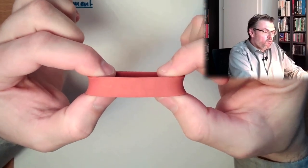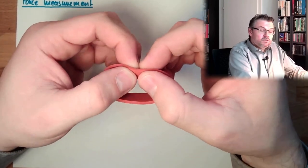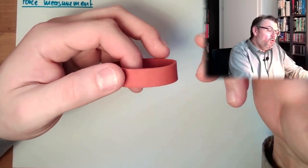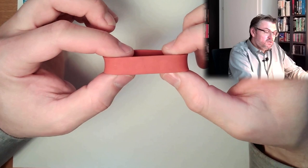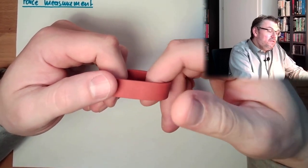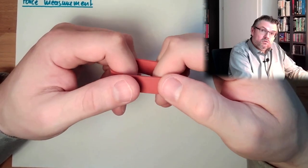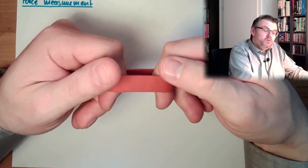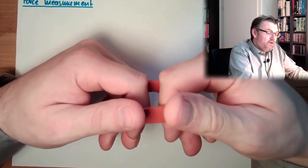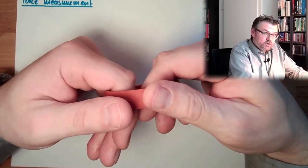Well, there is a force applied to the rubber band. The rubber band has a certain cross section. This force is applied to this cross section. And so we can think about distributing the applied force over the whole cross section. And this distributed force over an area is called stress, mechanical stress, or also tension.